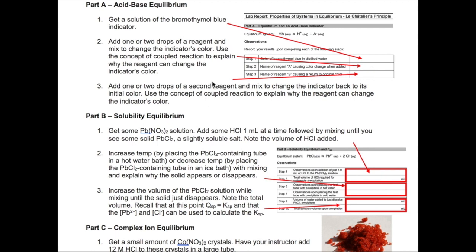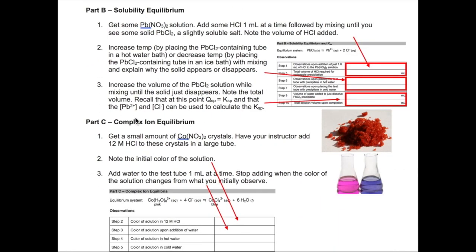Three, think about a reagent that can now switch the color back to its original color. Add one or two drops of this reagent, mix it, and see if the initial color of bromothymol blue shows up. If it does, then record the reagent's identity here. Now, if you don't remember how to cause these shifts in the concept of coupled reaction, go back and rewatch video one in this series. Okay, now for Part B.